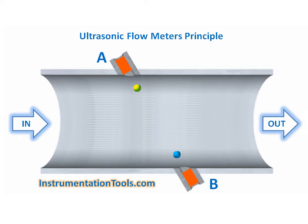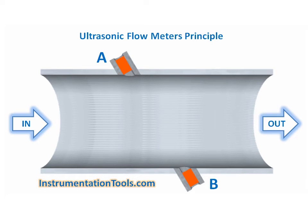Ultrasonic flow meters use sound waves to determine the velocity of a fluid flowing in a pipe. At no flow conditions, the frequencies of an ultrasonic wave transmitted into a pipe and its reflections from the fluid are the same. Under flowing conditions, the frequency of the reflected wave is different due to the Doppler effect.